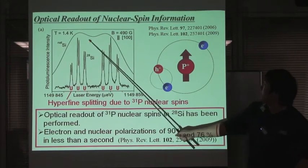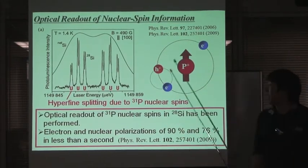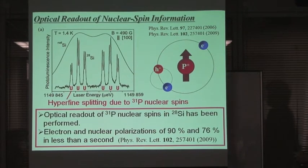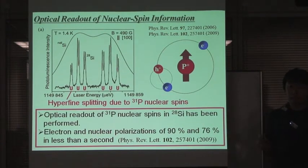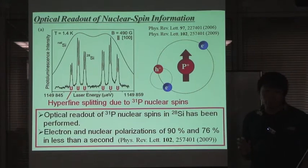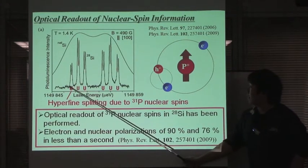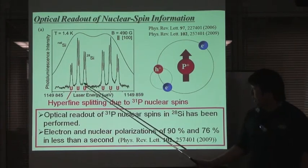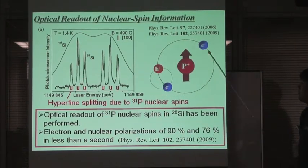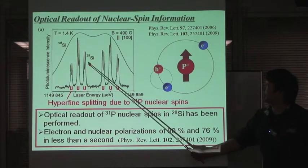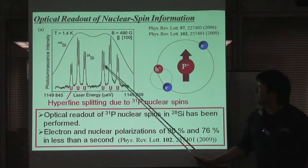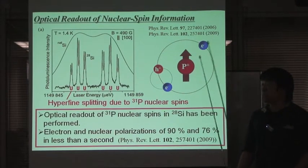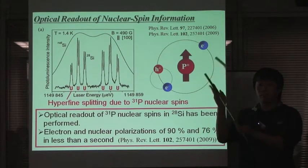This broad spreading has been observed from the exciton band to phosphorus in non-isotopically controlled silicon. This broad spreading is caused by the inhomogeneous distribution of silicon isotopic composition. While hyperfine splitting due to phosphorus has been observed from the phosphorus-bound exciton in isotopically purified 28-silicon, because of suppressing the inhomogeneous distribution of silicon isotopic composition. Each fine splitting corresponds to the phosphorus nuclear spin state, that is, up spin state and down spin state.